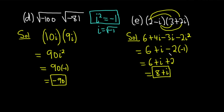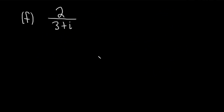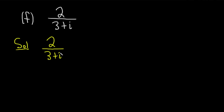Let's finish with a division problem. Part f: we have 2 over (3 plus i). The first step is to look at the denominator, which is 3 plus i, and multiply by its conjugate. So we have 2 over (3 plus i) times (3 minus i) over (3 minus i) — you find the conjugate by flipping the sign.